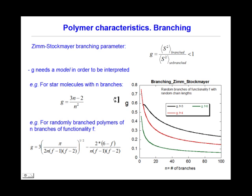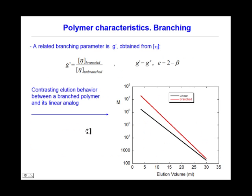An important issue in polymer solutions is branching. The Zimm-Stockmayer parameter provides a branching parameter; however, this requires a model in order to be interpreted. An example is shown here for star molecules of n-branches and for random branch polymers of n-branches of functionality f. A related branching parameter is obtained from intrinsic viscosity, and the graph contrasts elution behavior between a branched polymer and its linear analog, making it easy to distinguish between linear and branched structures.